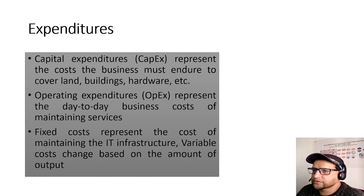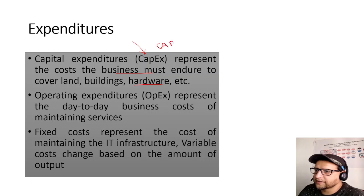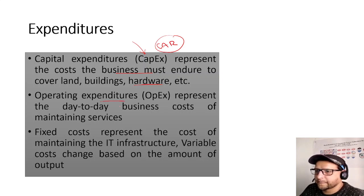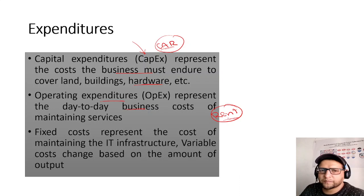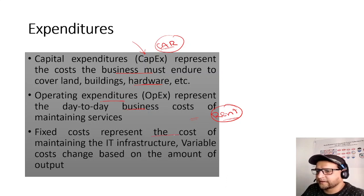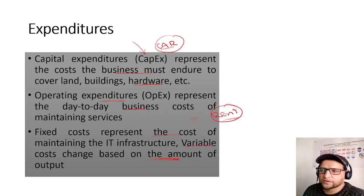Cloud expenditure types: CapEx (Capital Expenditure) represents one-time costs for land, buildings, and hardware — like purchasing a car. Cloud mainly uses OpEx (Operational Expenditure) — day-to-day business costs, like renting a car when you need it. Fixed cost represents the cost of managing IT infrastructure, while variable cost changes based on the amount of output.